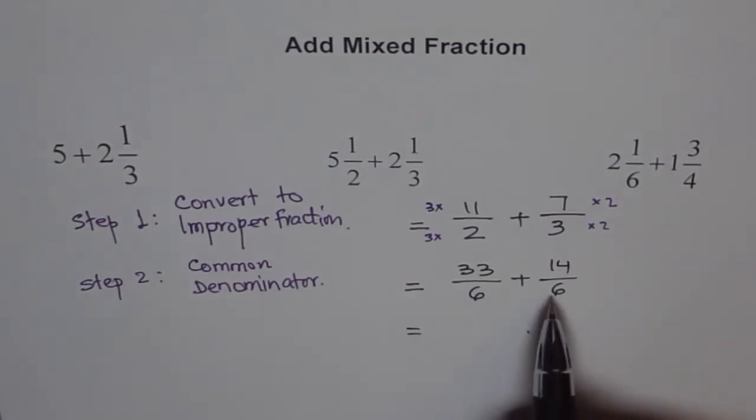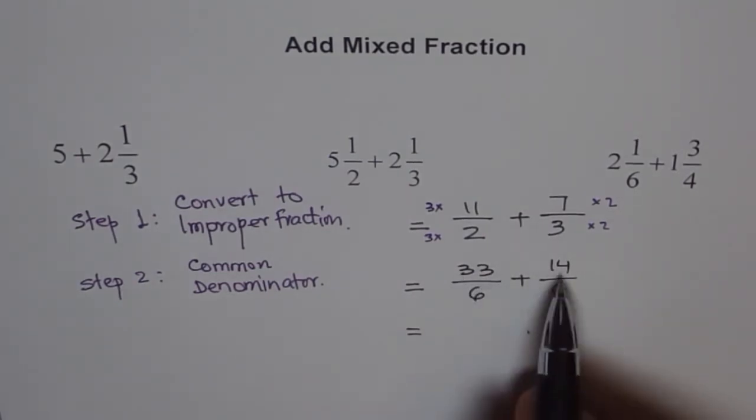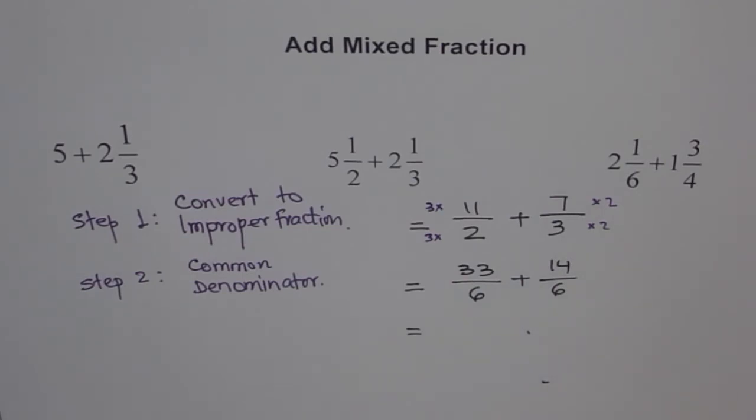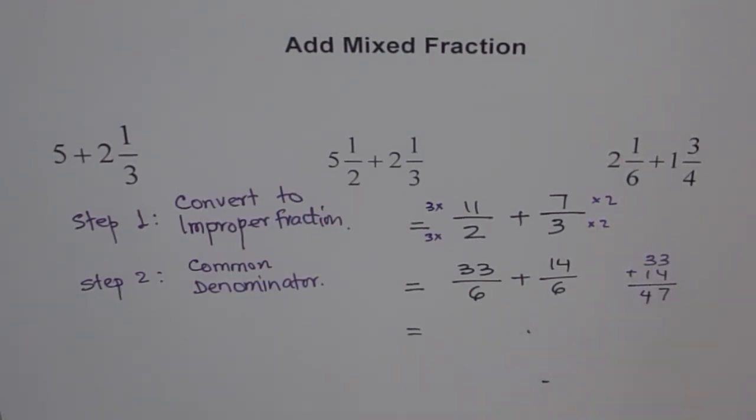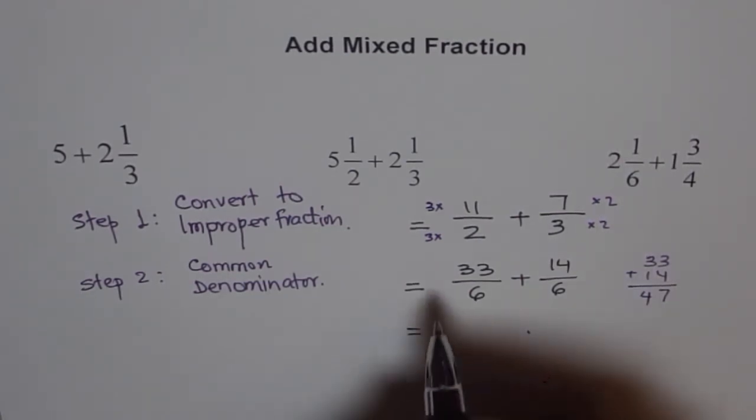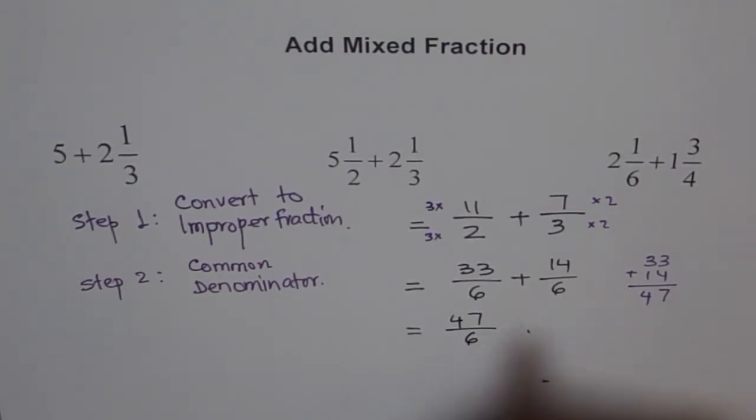Now, they have same denominator. So, you can add numerator. So, now add 33 and 14. Let us add 33 plus 14. 4 plus 3 is 7. 3 plus 1 is 4. We get 47. So, it is equal to 47 over 6. So, we get our answer as an improper fraction.